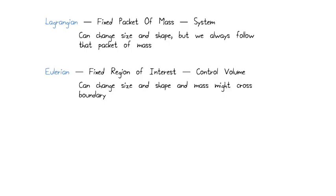The Lagrangian perspective is where we follow one packet of mass as it moves through the flow. Even if it changes size and shape, we always follow that packet of mass and we treat it like a particle that's moving.